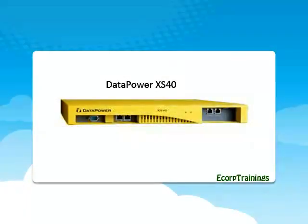Data Power XS40 model is often found in the DMZ as its security capabilities are extensive. It has all the capabilities of XA35 as well as additional capabilities such as encryption/decryption, digital signature creation and verification, fine-grained AAA features, Tivoli Access Manager integration, hardware storage module option, service-level monitoring, and dynamic routing. The model provides good web service management features.